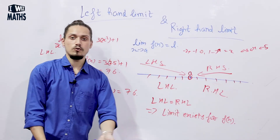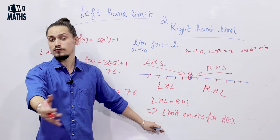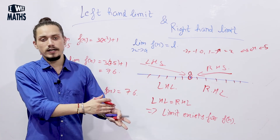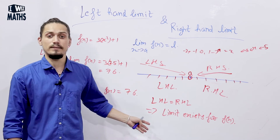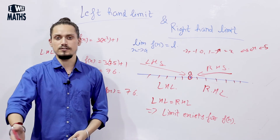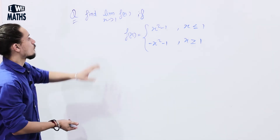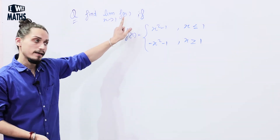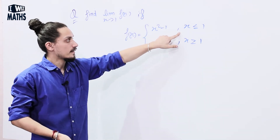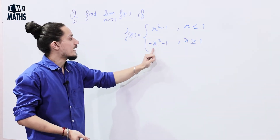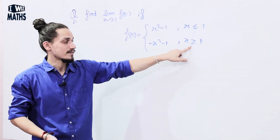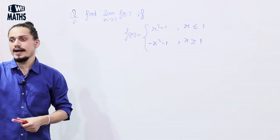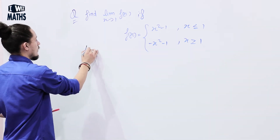So if someone asks you to find if the limit exists for a function, you need to find both the left hand limit and right hand limit. If they are equal, the limit exists; otherwise the limit does not exist. In the next example, we have to find lim (x → 1) f(x) where f(x) = x² - 1 if x ≤ 2, and f(x) = -x² - 1 if x ≥ 1.